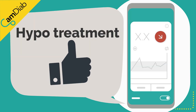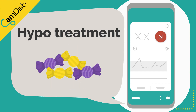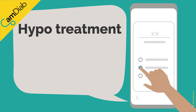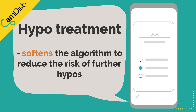The hypoglycemia treatment is the one add meal option we would recommend everyone uses. If you've had a hypo, please put the amount of rescue carbs you took to treat the low in add meal. This records the amount of rescue carbs and helps you and your diabetes team look for patterns and refine the right amount of hypo treatment you need. Adding the rescue carbs into add meal also softens the algorithm's calculation for the next little while to reduce the risk of having further hypos.